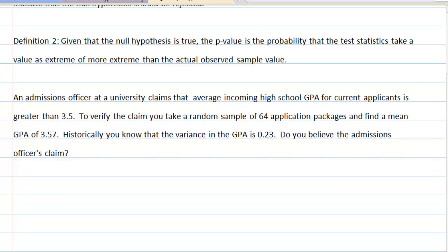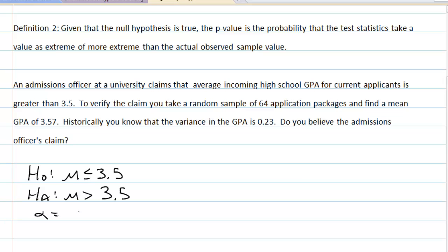As a quick review, we'll review the hypothesis test that we had done in a previous video. We'll start with the null hypothesis. The null hypothesis was the mean incoming GPA was less than or equal to 3.5. The alternative was the mean incoming GPA of the high school students is greater than 3.5. We had used an alpha, or a probability of a type 1 error, which is 0.05. And our test statistic is y-bar.